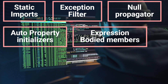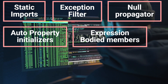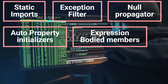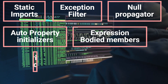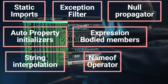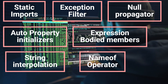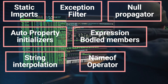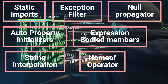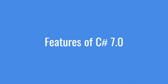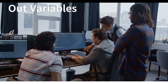The null propagator, also called the null-conditional operator, applies to member access using the '?.' or '?[]' operators. String interpolation uses the dollar character to identify interpolated string literals. The nameof operator produces the name of a variable, type, or member as a string constant. These were the features of C# 6.0.